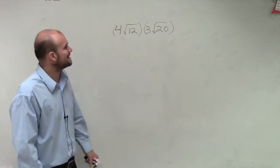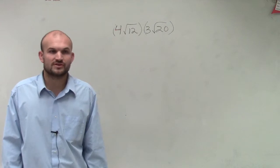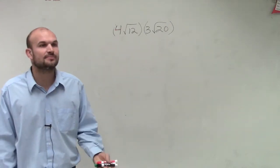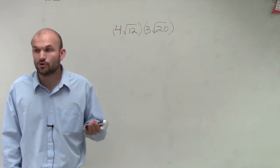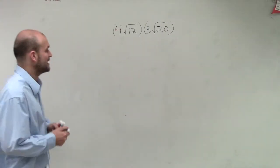So, we have 4 times square root of 12 times 3 square root of 20. What I'd like to do first is, whenever you have a radical that you can simplify, we have to simplify the radicals. That's why it becomes so important for us to get really good at simplifying our radicals.